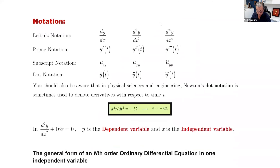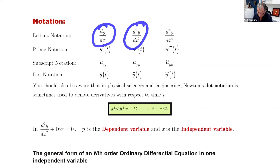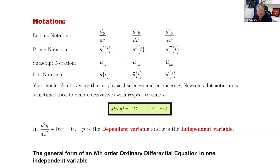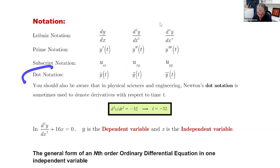Let's go over the notation. How can you present a differential equation? First, we have Leibniz notation — first derivative, second derivative, and third derivative. We have prime notation: y prime, y double prime, y triple prime. There's subscript notation: u_xx, u_xy, u_yy. And also dot notation: y-dot, y-double-dot, and so on. These are different ways of presenting differential equations.